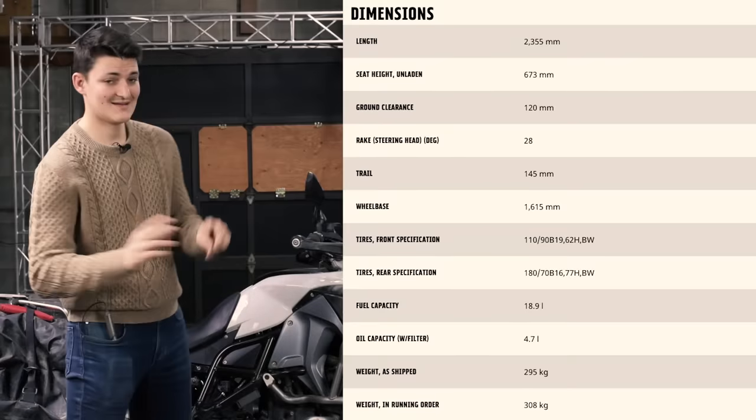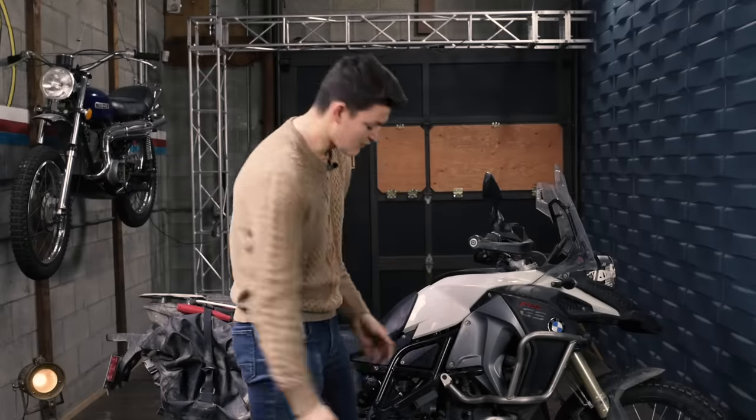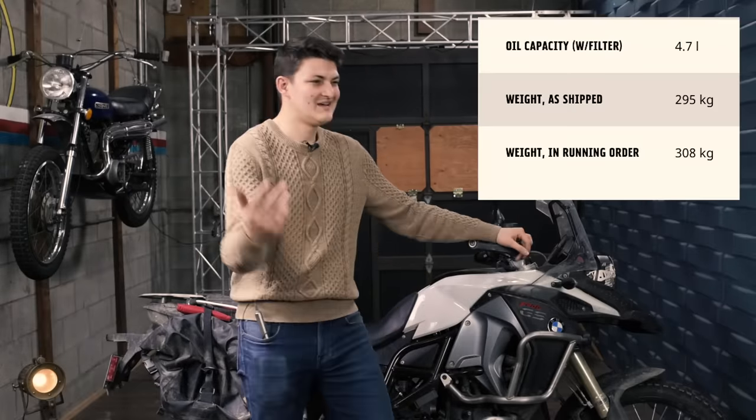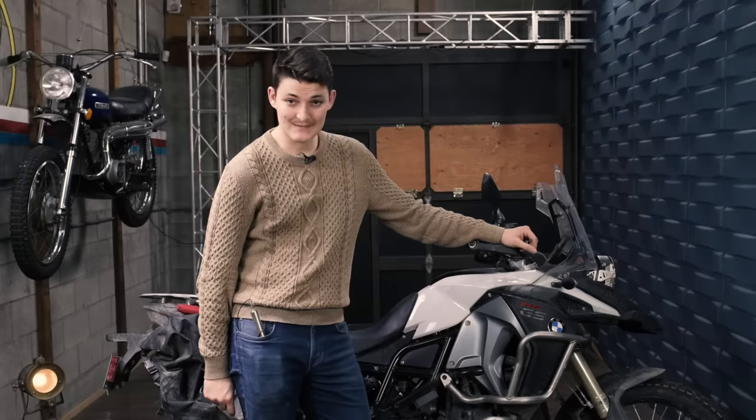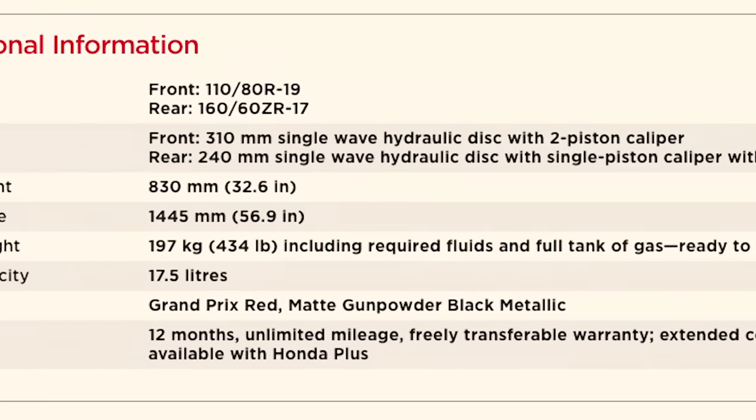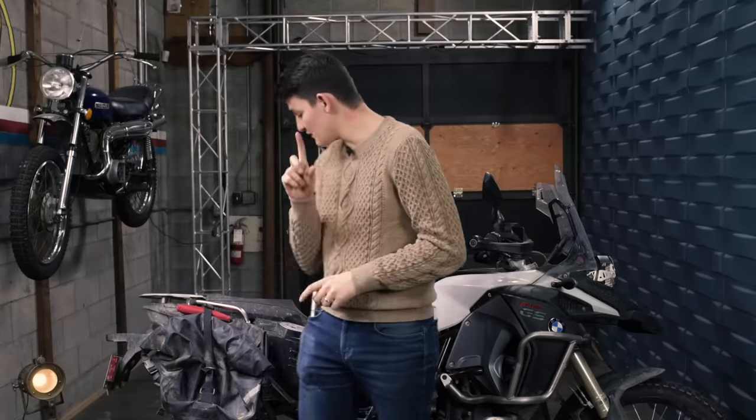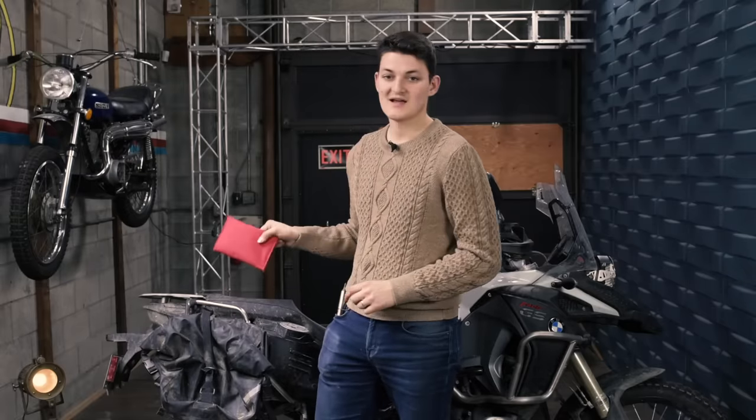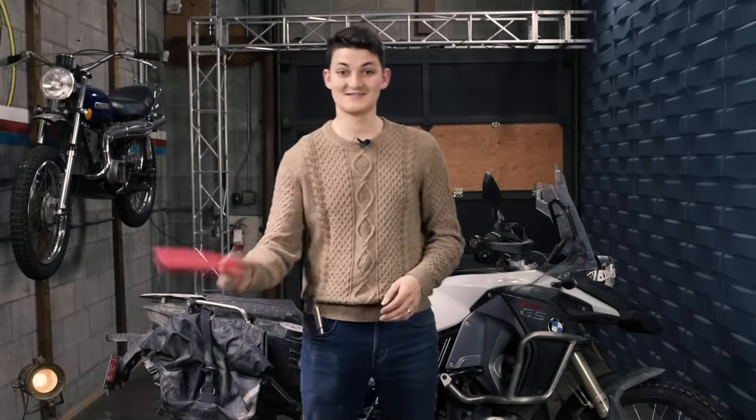Harley-Davidson lists weight in running order. Of course, a bike will run with a teaspoon of fuel in the line, so that means precisely dick. Japanese brands typically list curb or wet weight—full reservoirs of all the required fluids—though they're not above leaving detachable things like toolkits off the scale.